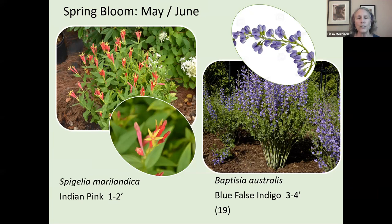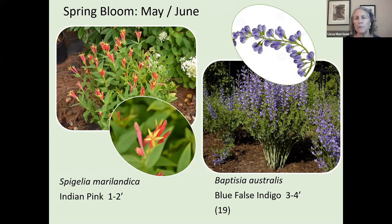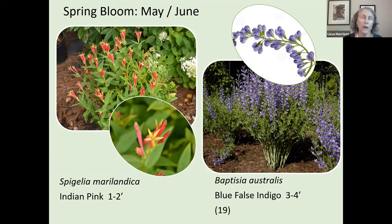Blue Baptisia is a very striking and showy plant with interesting black seed pods that even make a rattle — a fun toy for children. An interesting fact: new queen bumblebees go to this plant because they need dense nutrition to establish a new hive. Blue indigo provides that service for new queen bumblebees. It's tough, beautiful, comes back every year, and supports our native bumblebees.